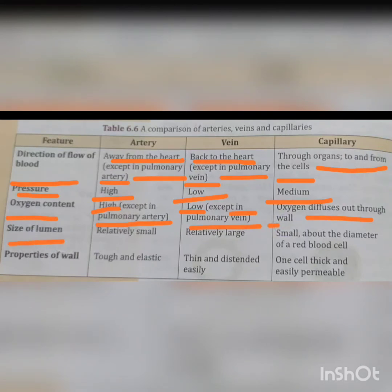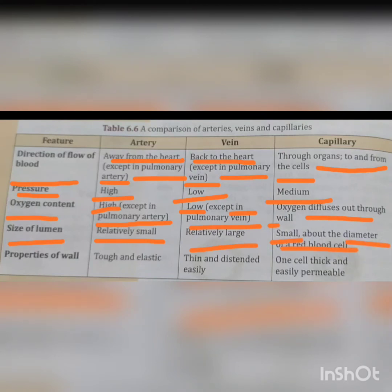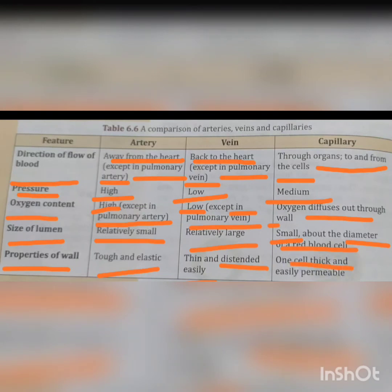Regarding the size of the lumen: in arteries it is relatively small, in veins it is relatively large, and in capillaries it is small — about the diameter of a red blood cell. Regarding the properties of the wall: in arteries the walls are tough and elastic; in veins the walls are thin and distend easily; and in capillaries the walls are one cell thick and easily permeable.